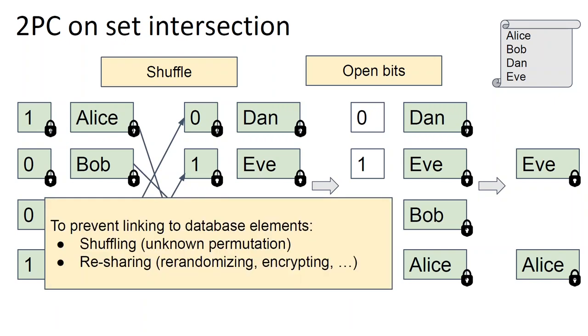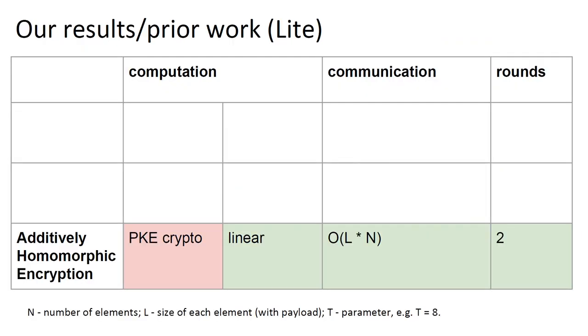Intuitively, no one learns which elements are in the intersection because the permutation is hidden. Again, note that it's very important that elements are randomized when they are shuffled, because otherwise parties can link new and old elements together and learn the intersection. And our primitive, secret shared shuffle, is designed exactly for that and allows to perform such filtering. Finally, let me note that each element of the database can be relatively long. For example, in our example with machine learning, each element can come with a payload such as a feature vector, and during shuffle this payload has to be moved around together with the key.